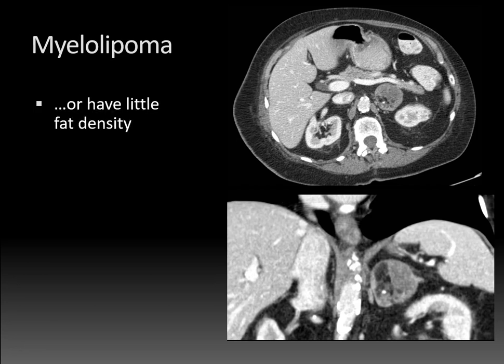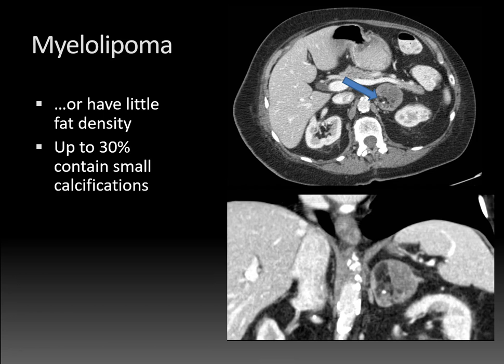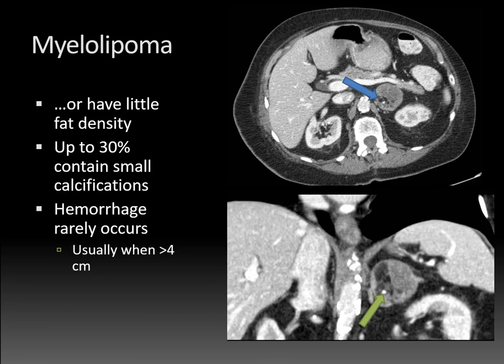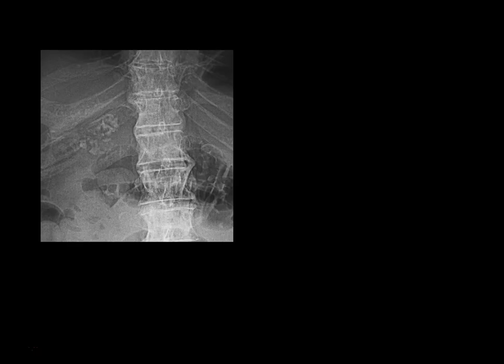Myelolipomas can also have very little fat density — here's an example of just a small amount of fat density within an otherwise soft tissue-predominant myelolipoma, with the blue arrow pointing to the small area of macroscopic fat. It's also not unusual to have small calcifications within myelolipomas — up to 30% can have calcifications, denoted here by the green arrow. Other adrenal masses that can have calcifications include pheochromocytomas and adrenal cortical carcinomas. Hemorrhage is a potential complication of myelolipoma, but it's very uncommon and typically only seen when tumors become large — more than four centimeters. The nice thing about myelolipomas is they're completely benign with no risk of malignant transformation.